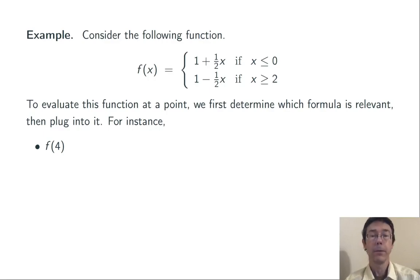To do f of four, we look at the inequalities and we see that four is greater than or equal to two, so we're in the second case. We plug in to one minus one half x and simplify to get that f of four is negative one.